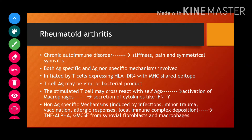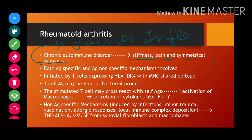Rheumatoid arthritis, or RA, is a chronic autoimmune disorder in which we see symptoms like stiffness, pain, or symmetrical synovitis. Synovitis means inflammation of the synovial fluid present in joints — essentially, joint inflammation. These are the symptoms seen in rheumatoid arthritis.